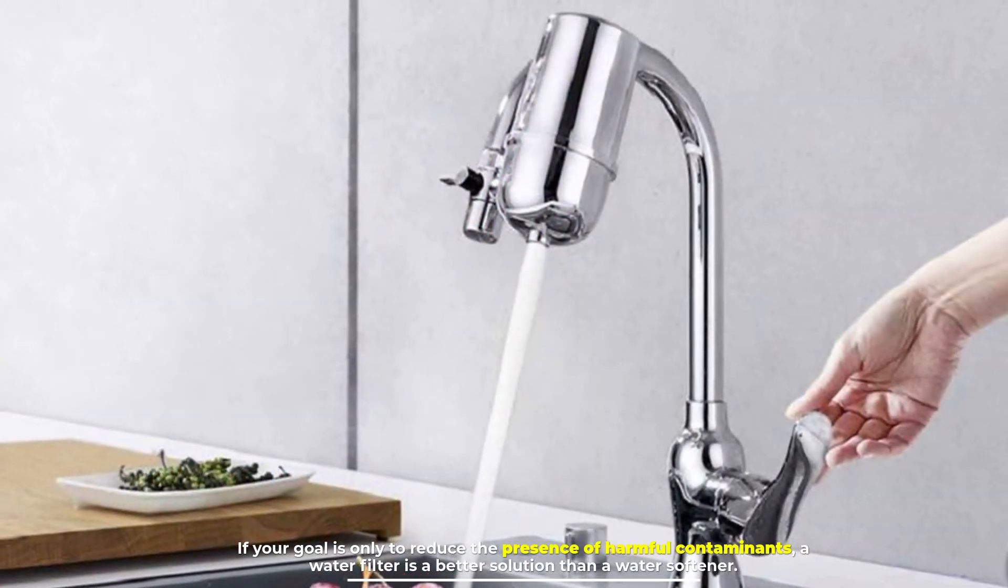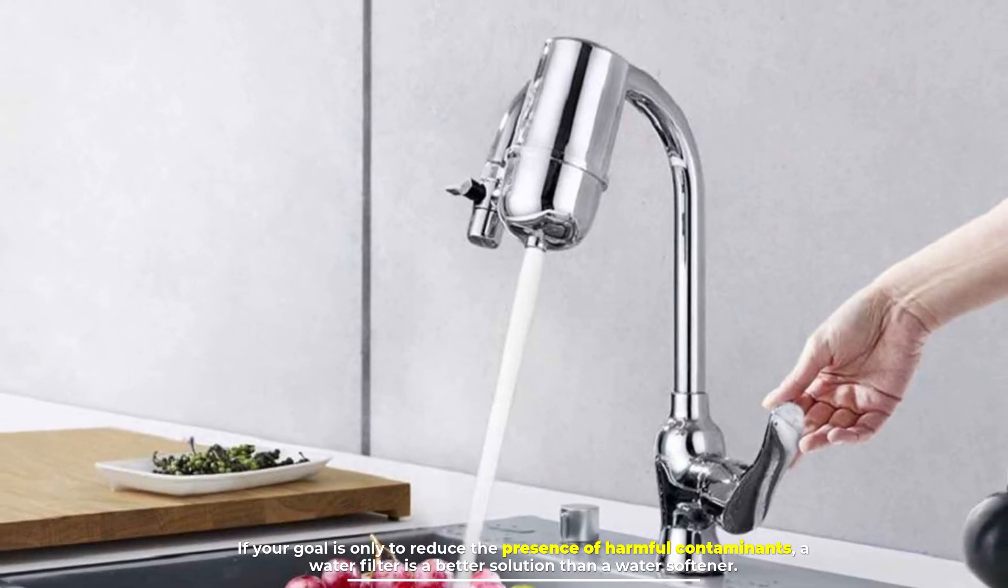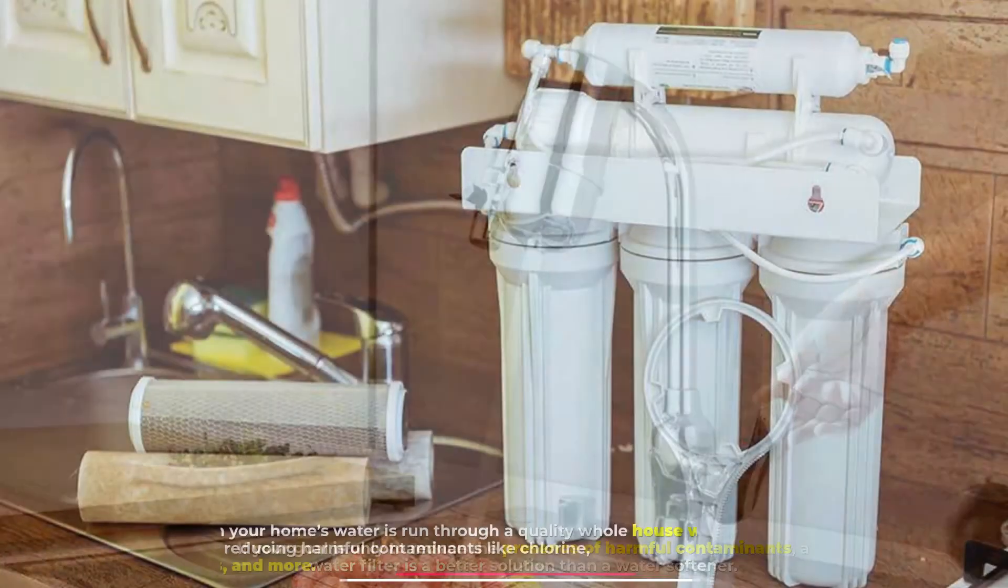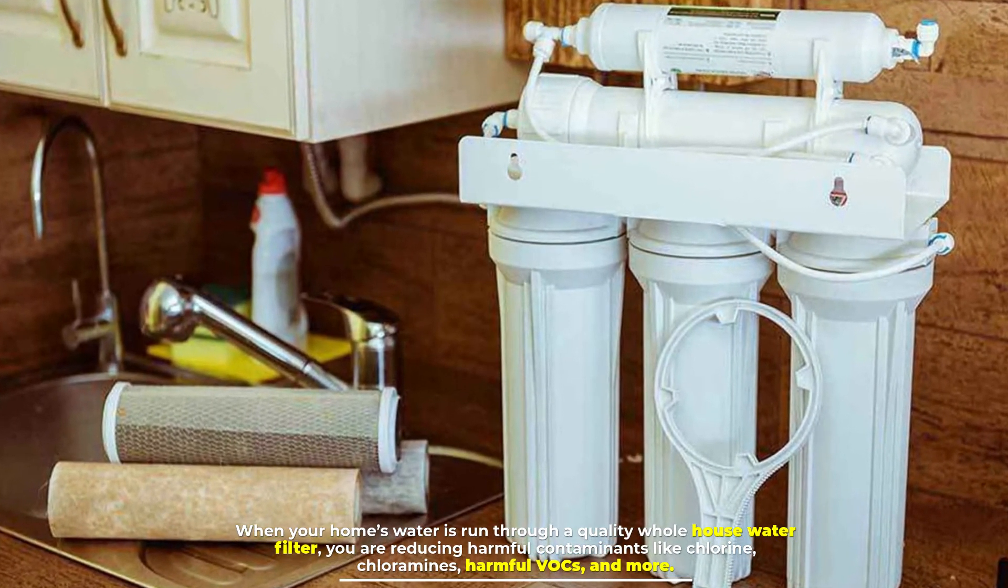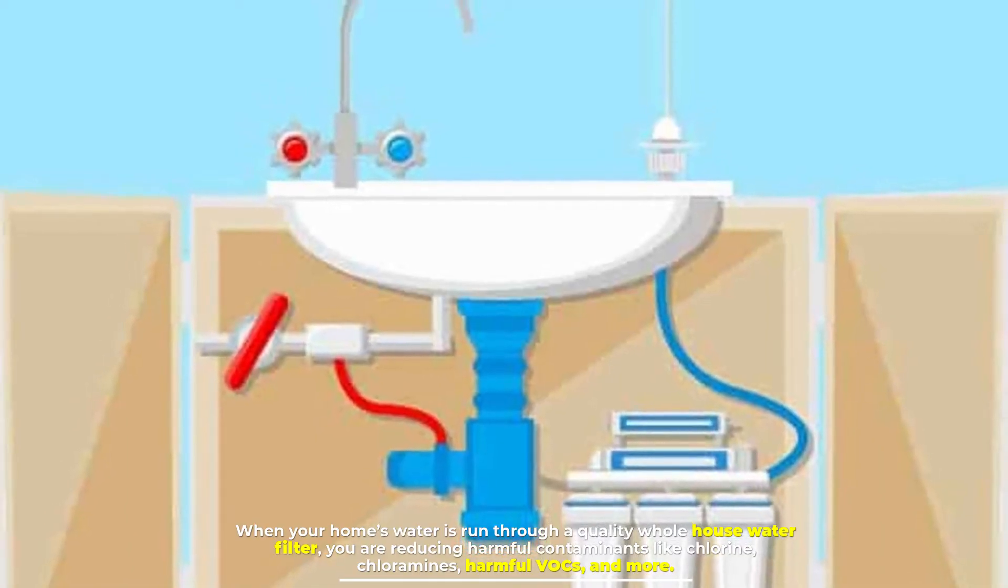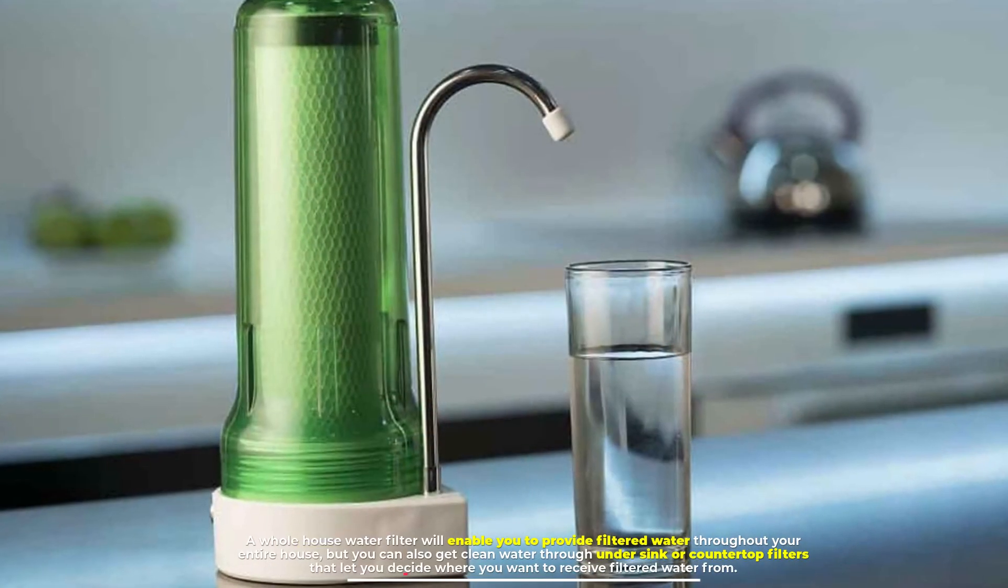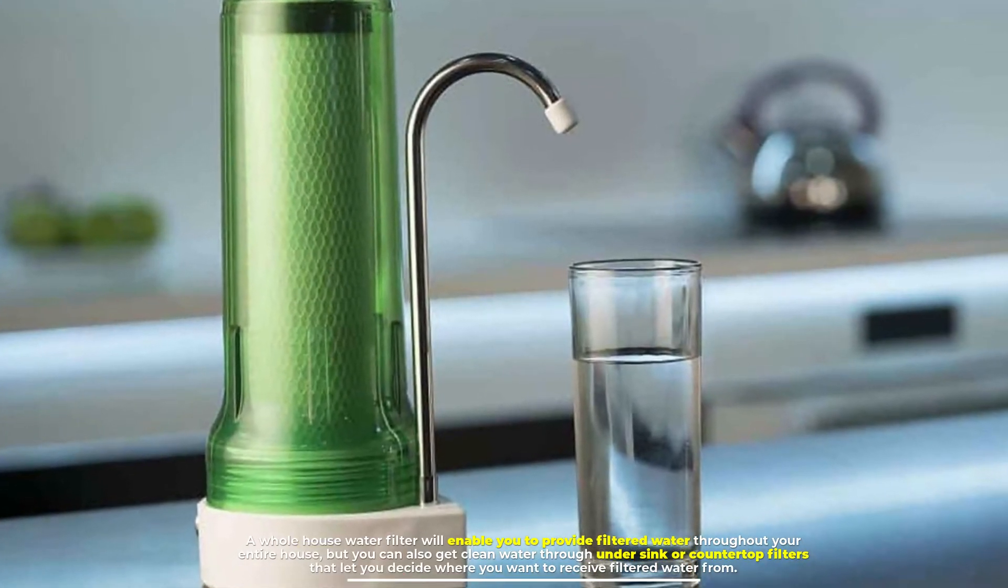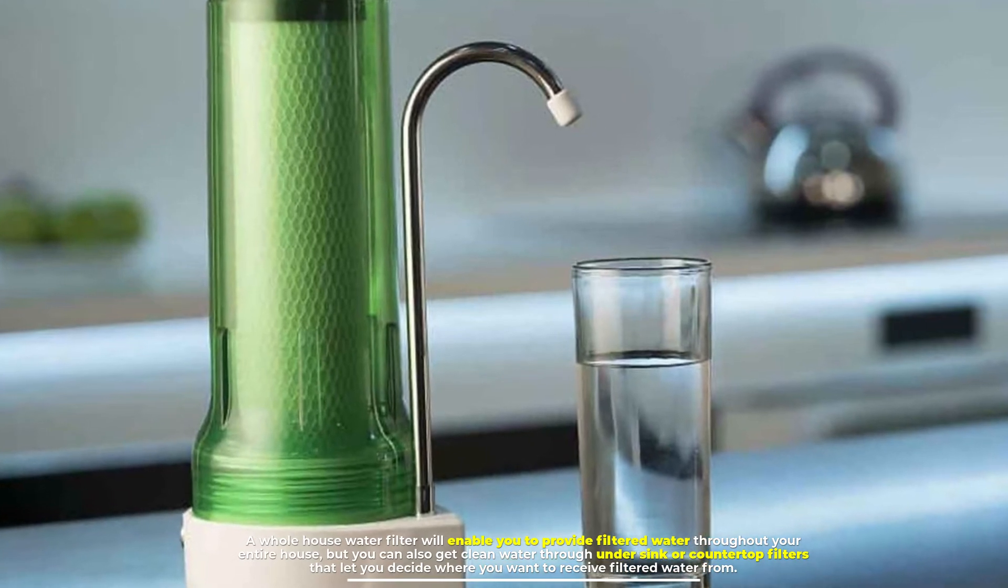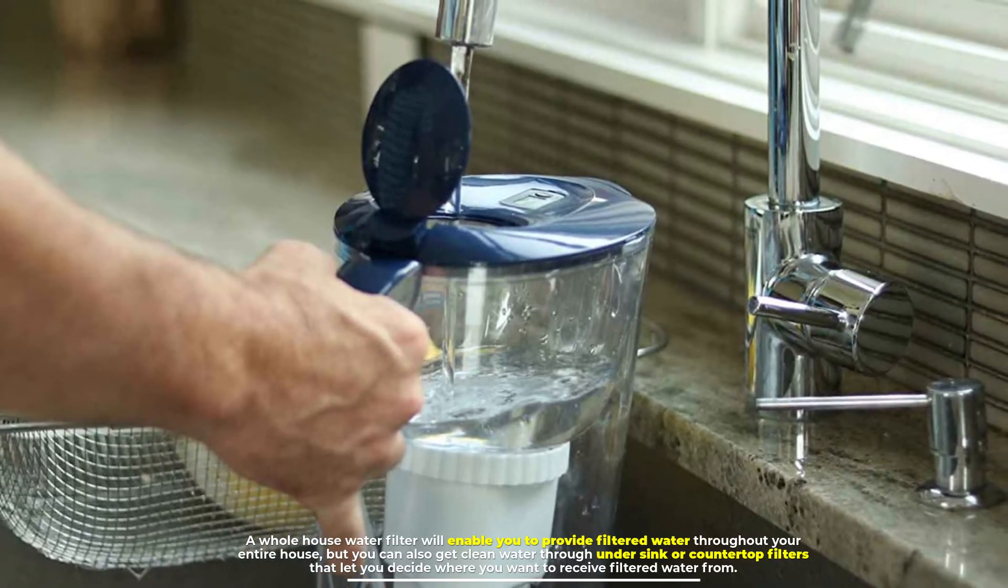Number four: Why a water filter is better than a water softener. If your goal is only to reduce the presence of harmful contaminants, a water filter is a better solution than a water softener. When your home's water is run through a quality whole house water filter, you are reducing harmful contaminants like chlorine, chloramines, harmful VOCs and more. A whole house water filter will enable you to provide filtered water throughout your entire house, but you can also get clean water through under sink or countertop filters.